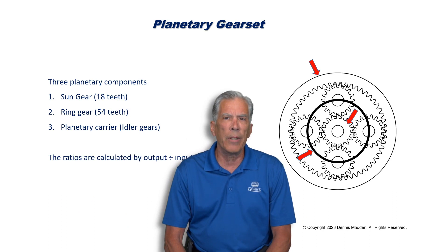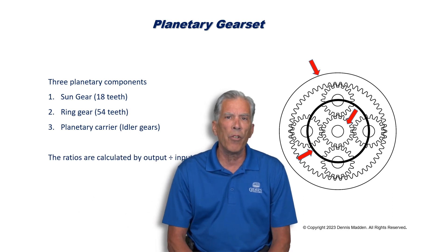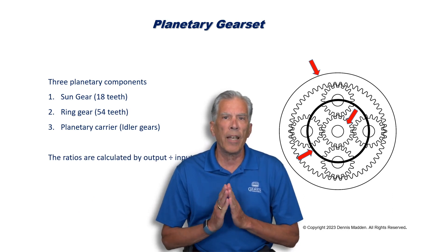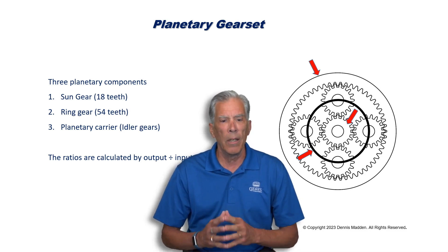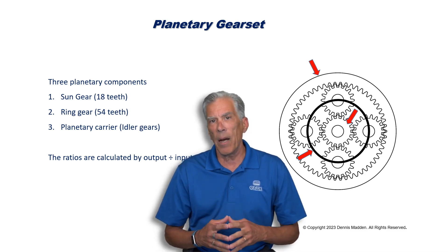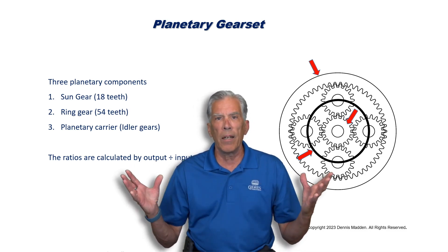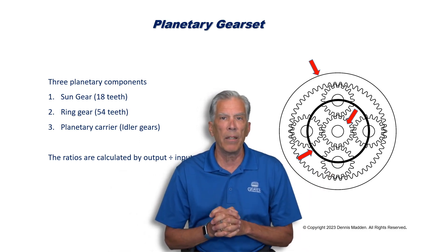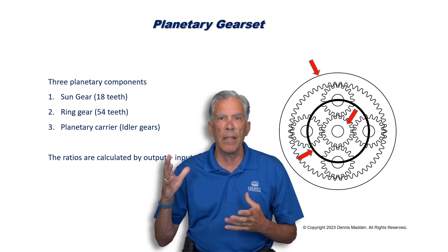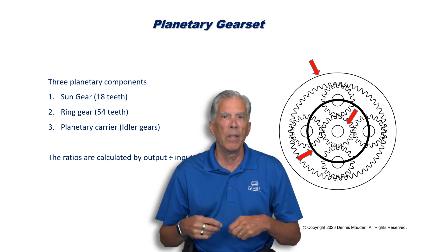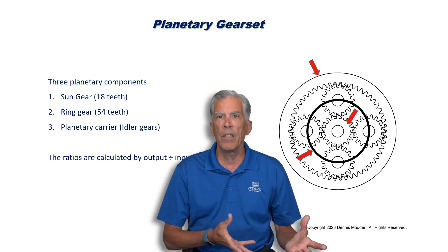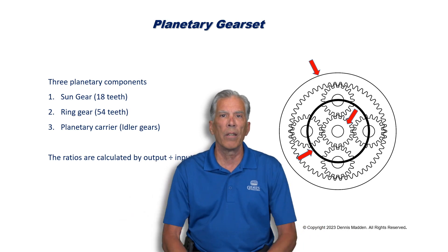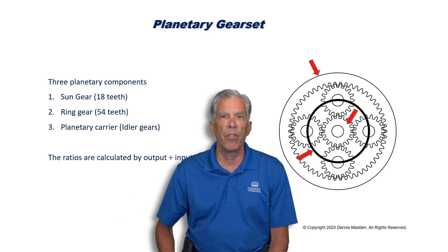When you get into the math, understand that the ratio is calculated by the output divided by the input. If you think of a differential with a ring and pinion, it would be the ring gear — which is the output — divided by the pinion, which is the input. All ratios are calculated in that fashion.